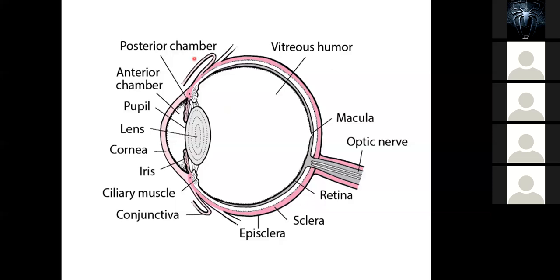The whole eyeball has an outer fibrous layer, then a middle pigmented layer, and then the inner neural tissue which is the retina. So the retina, the uvea, and the sclera. We have our lens, our anterior chamber, our posterior chamber. The fluid in those chambers is termed aqueous humor. We also have the vitreous humor, the macula, and the rest.